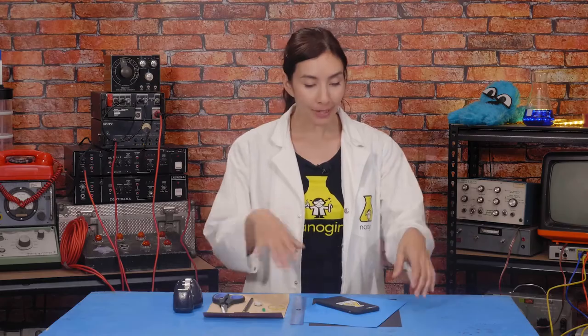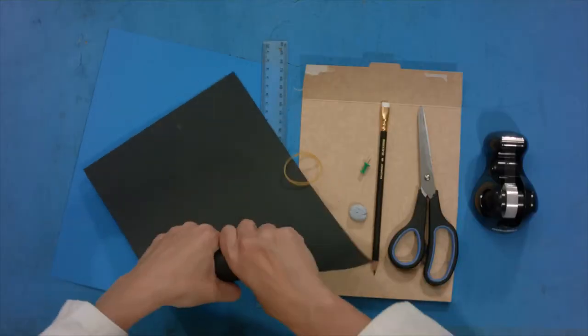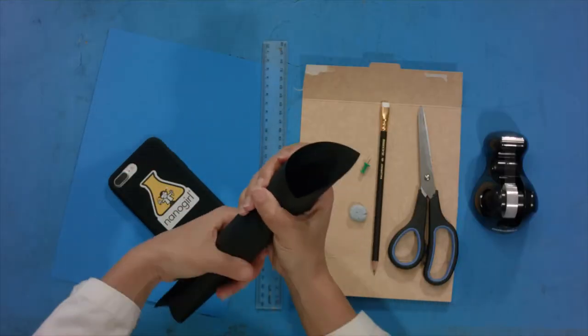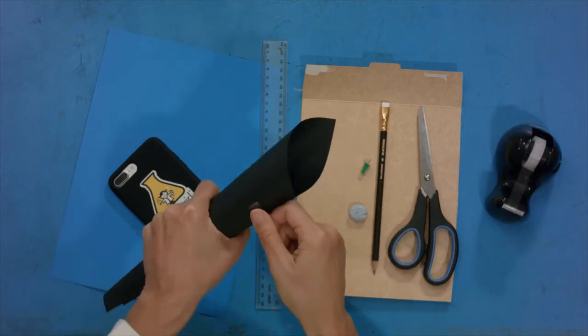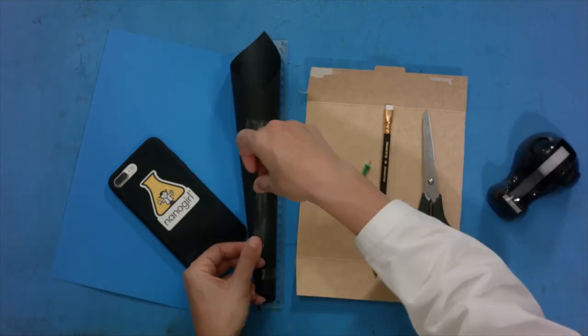To start, we are going to make the projector. So take your sheet of card or paper and roll it up from one corner to make a cone. Once you have your cone shaped, tape it in place.